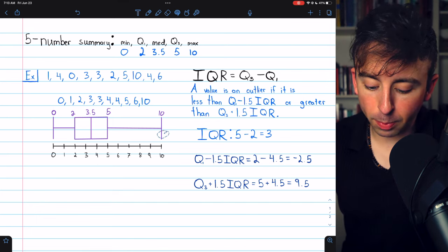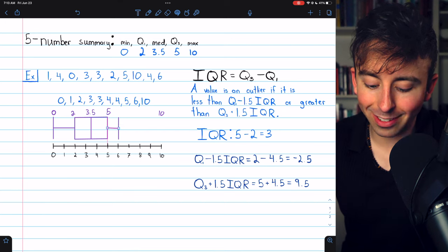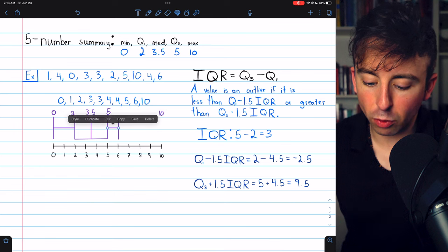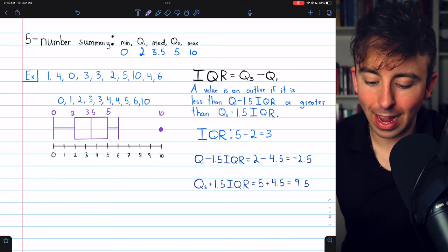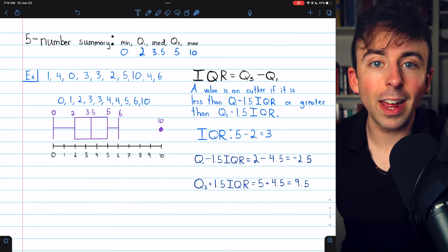To represent that on our box plot, we can make it so the maximum whisker only goes to the maximum excluding 10, and then we can just draw a dot to represent 10 as an outlier. And that's what this would look like as a modified box plot.